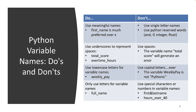Only use letters for variable names. Technically you can use numbers as long as they aren't the first character, but it's better to avoid them and stick to letters for clarity. Never use special characters other than the underscore — hashtags, ampersands, carets, asterisks all have specific meanings within Python. Using them in variable names will likely result in an error.